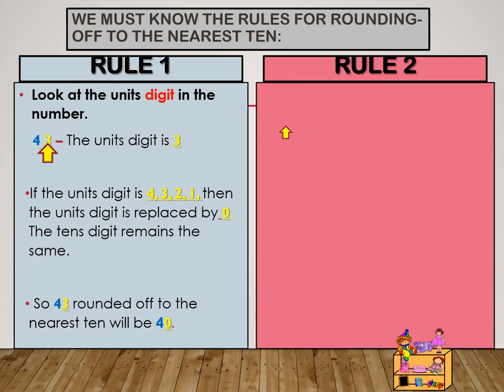Rule number 2. Look at the unit's digit in the number — for example, 47. The unit's digit is 7.